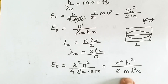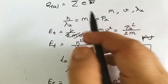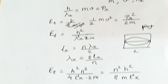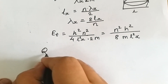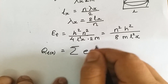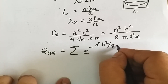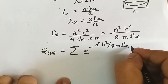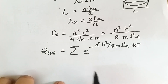We substitute this energy expression into our partition function equation. Hence the value of the translation partition function qt_x becomes equal to summation of e raised to minus n squared h squared upon 8mL_x squared kT. This is the representation of the partition function along the x-axis.